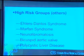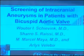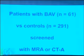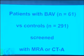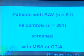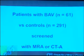We will now talk about an article that we're about to publish. What we did is we looked at 61 people with a bicuspid aortic valve — all adults — and we screened them with either an MR angiogram or a CT angiogram. Then I compared that to a group of people who came to our office with either a brain tumor — we see a lot of brain tumors — or people who came in with a headache, but not the typical headache of an aneurysm. That control group was 291 patients.